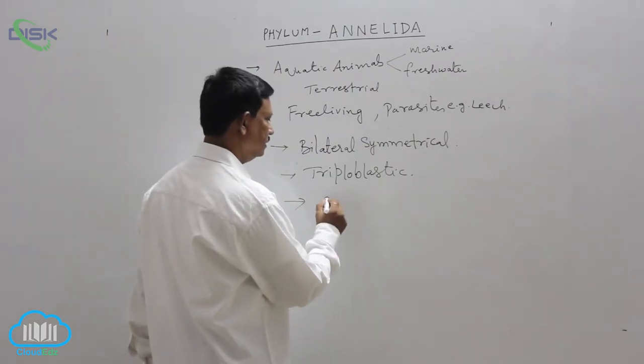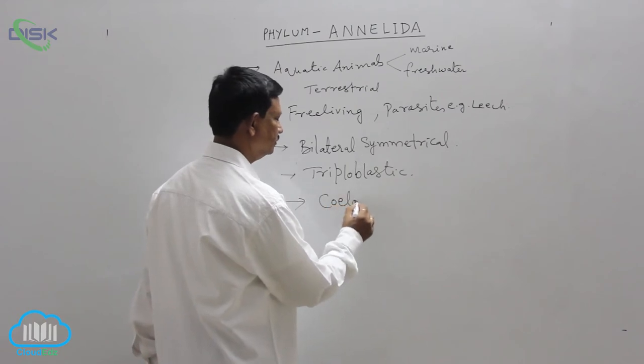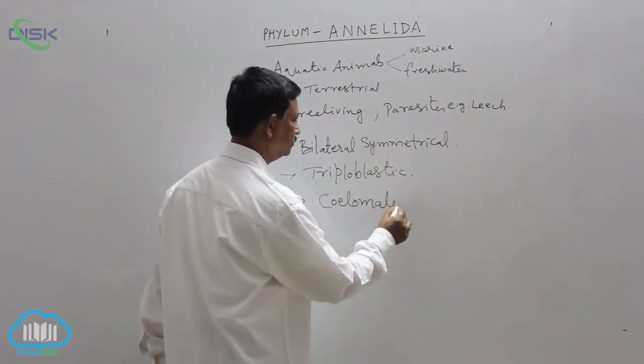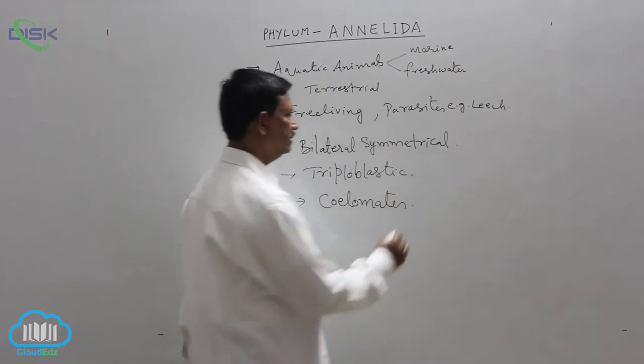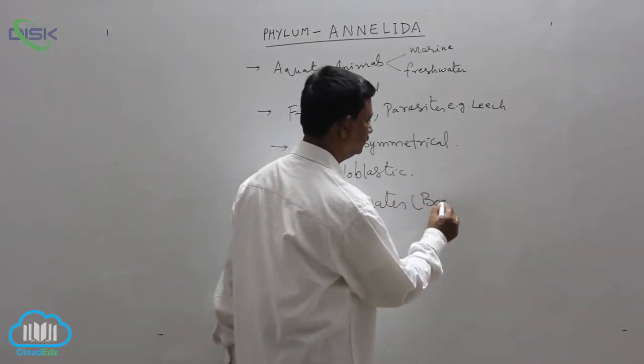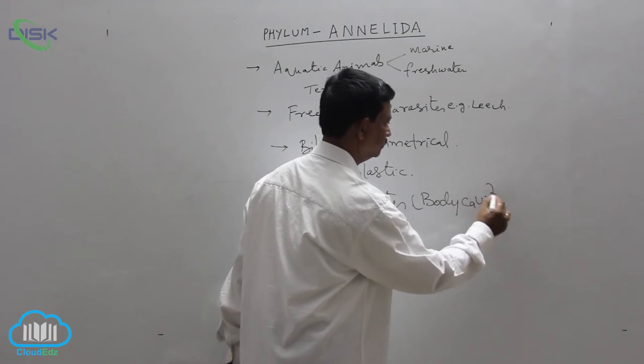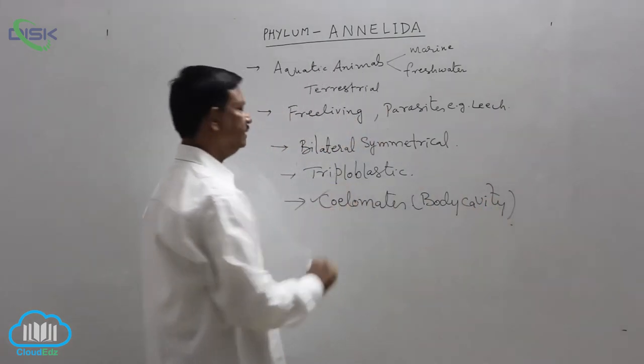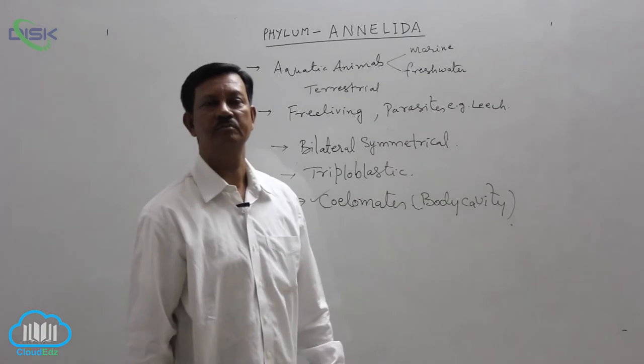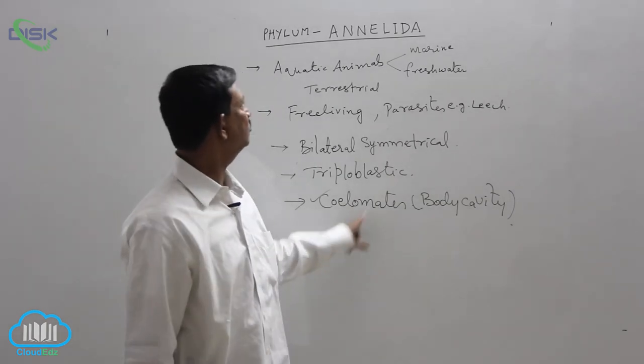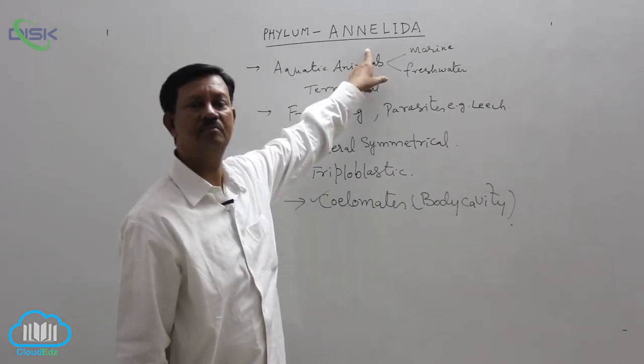They are coelomate animals. This is also known as body cavity. A coelom is true coelom. The first time, true coelom is found in the phylum annelida.